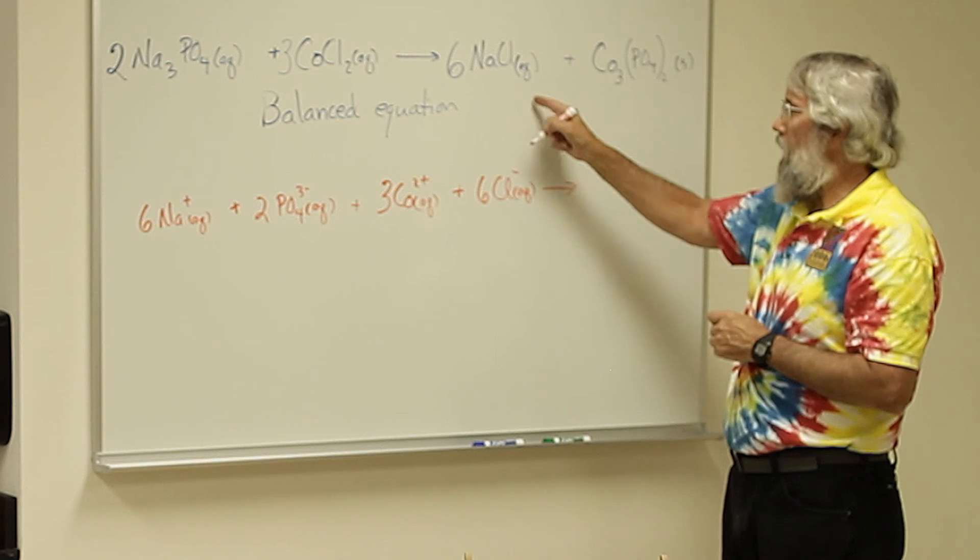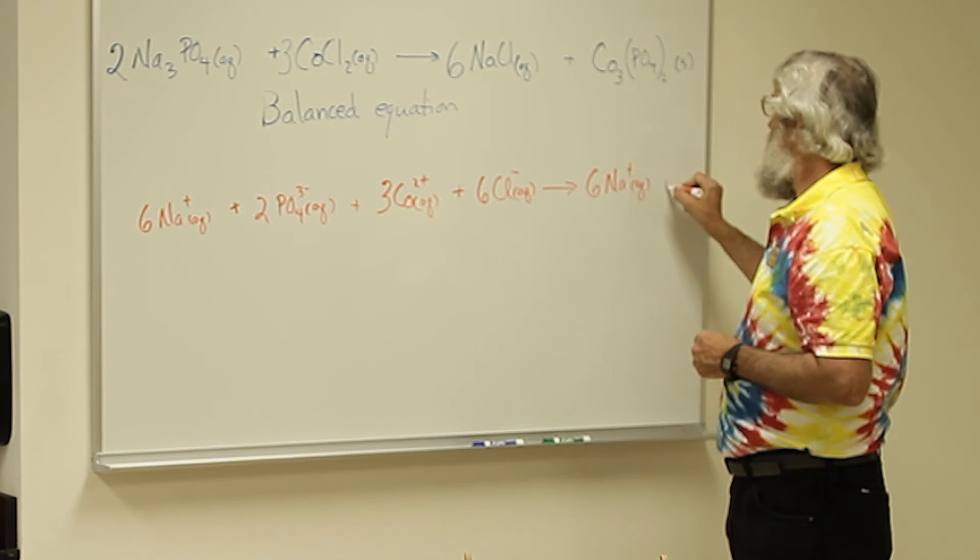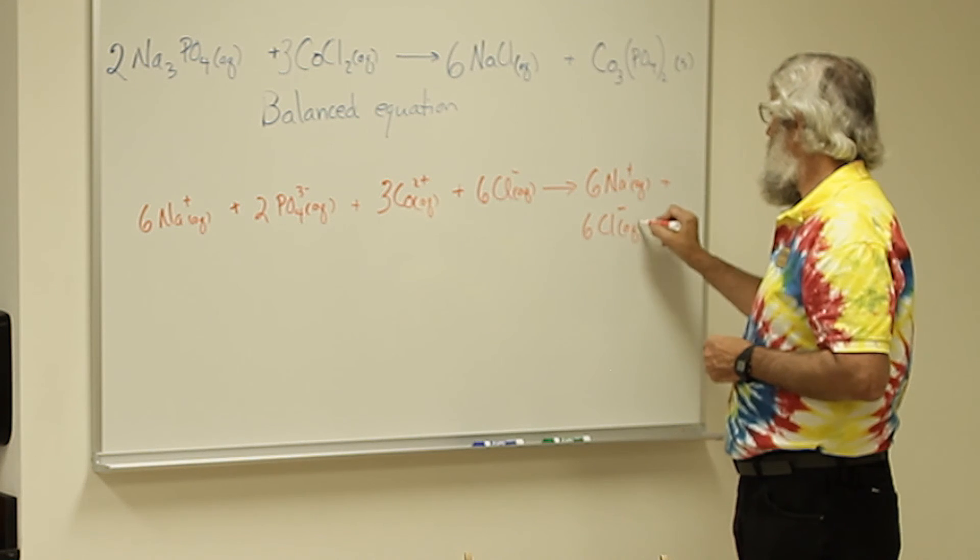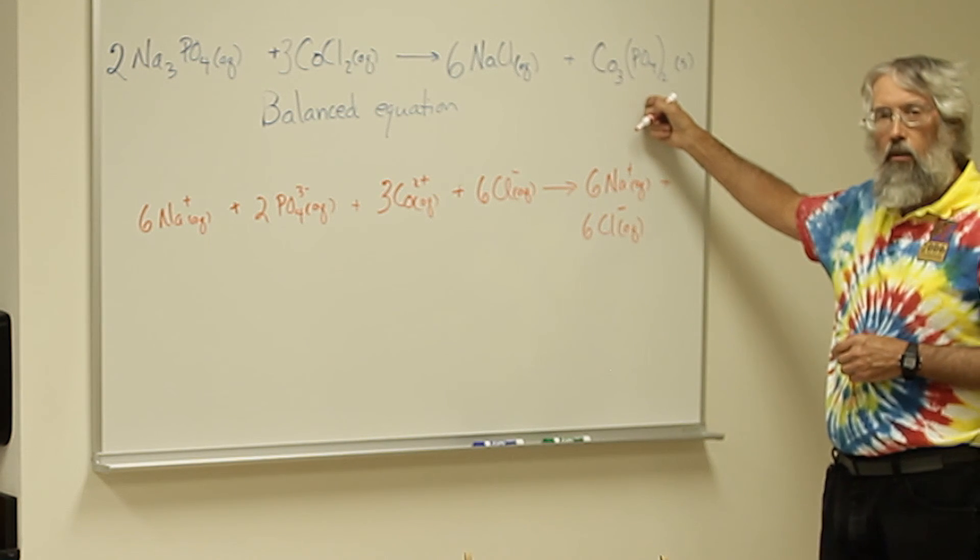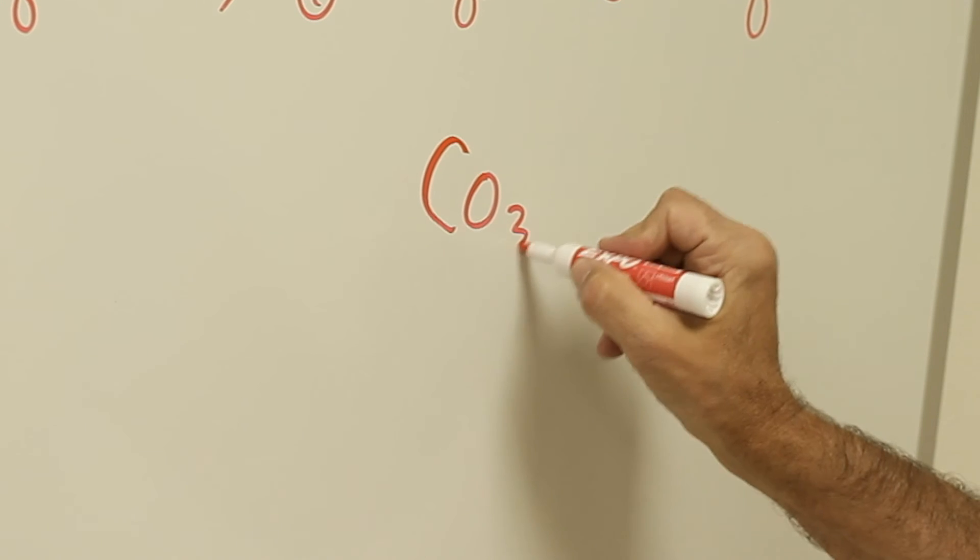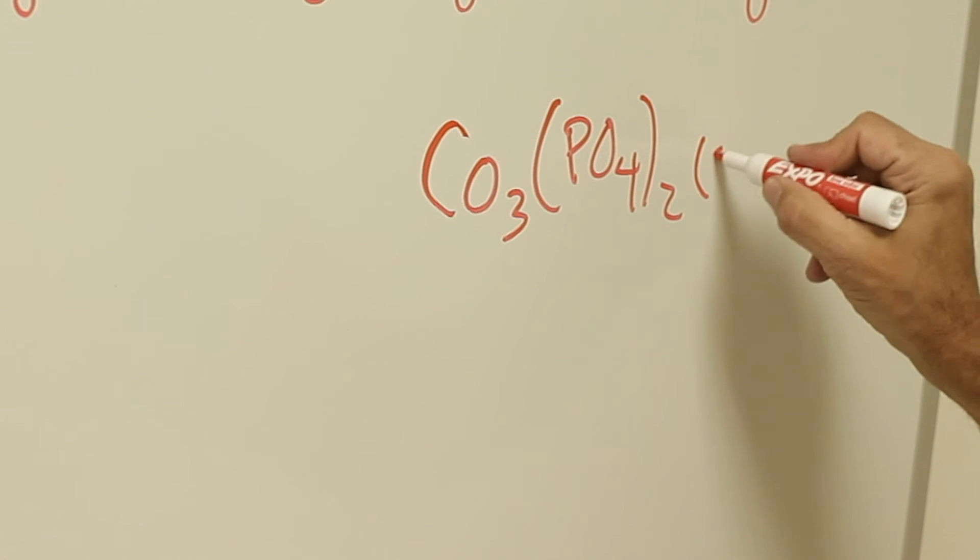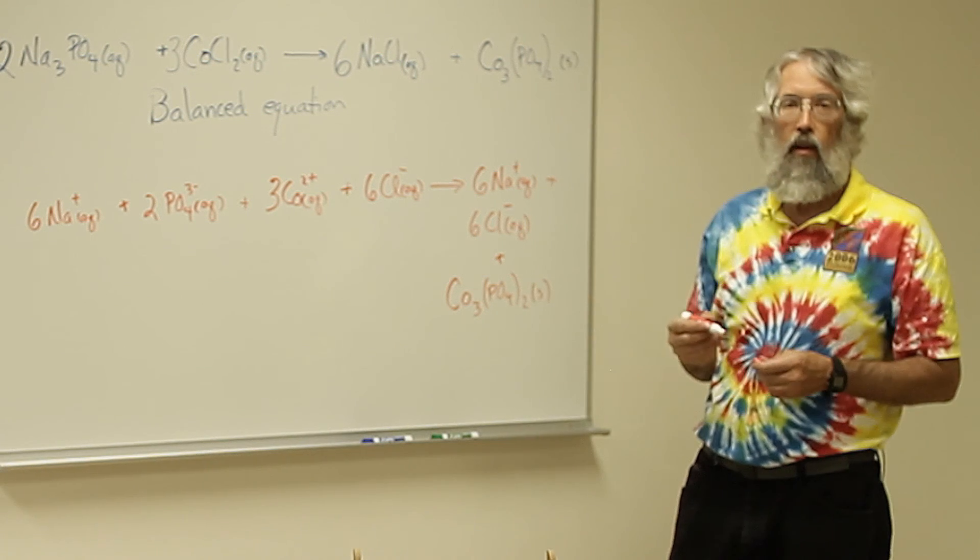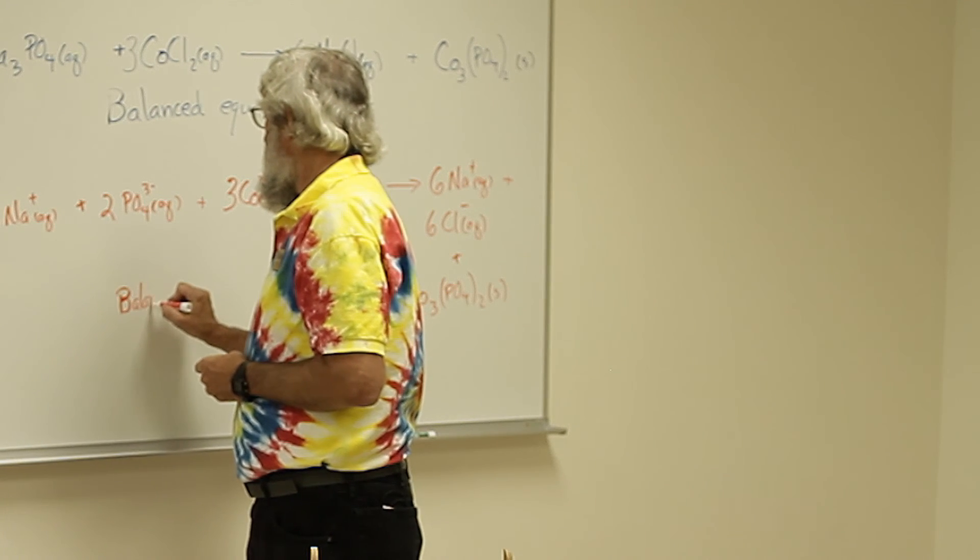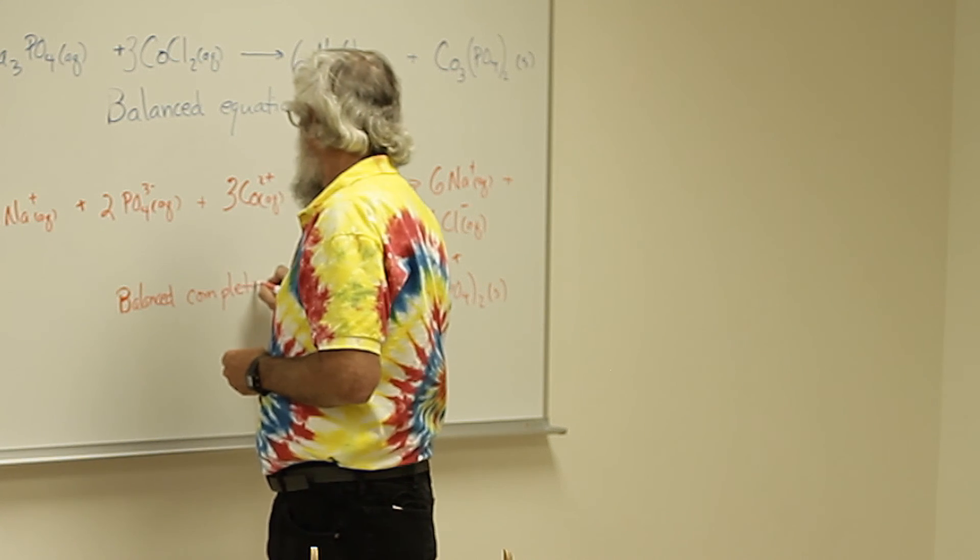For products, since this is aqueous, we have 6 Na+ and 6 Cl-. And now the cobalt phosphate is present as the precipitate, so it's not existing as ions. We simply write it as the formula Co3(PO4)2 solid. And this is now the balanced complete ionic equation.